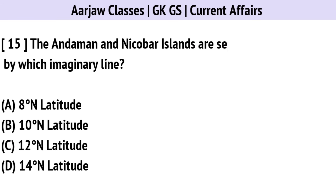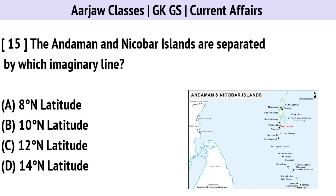The Andaman and Nicobar Islands are separated by which imaginary line? Correct option is B — the 10 degrees north latitude.